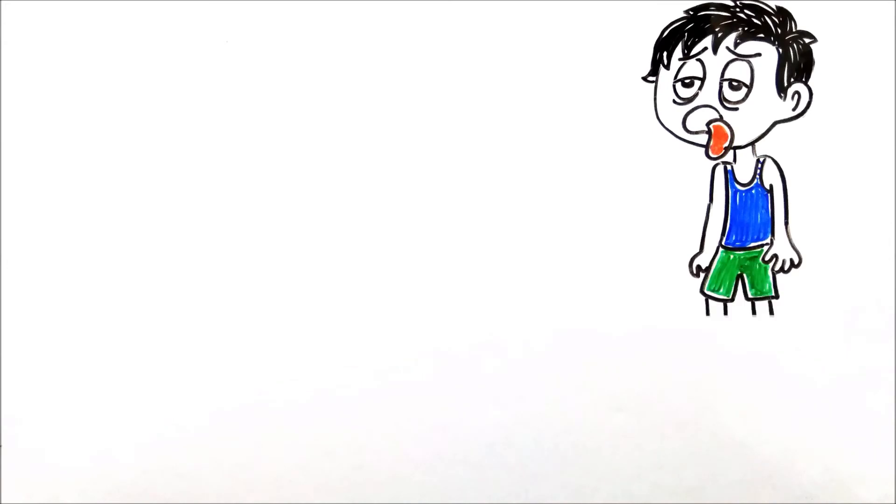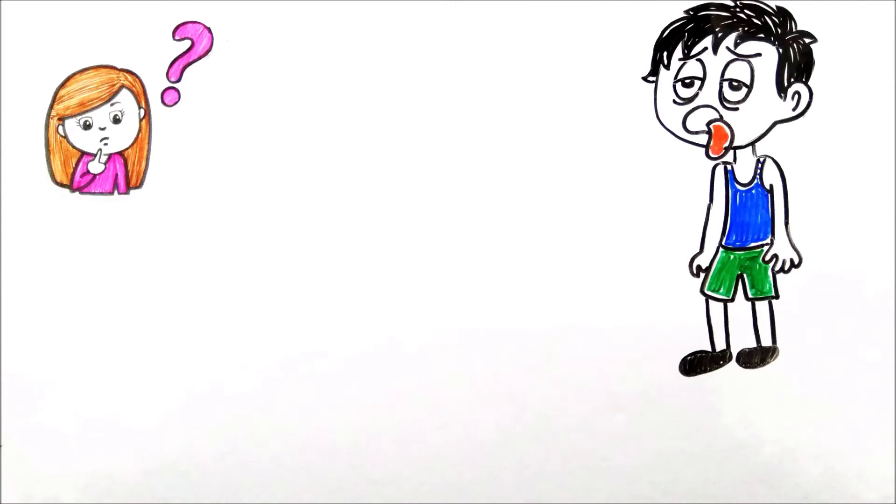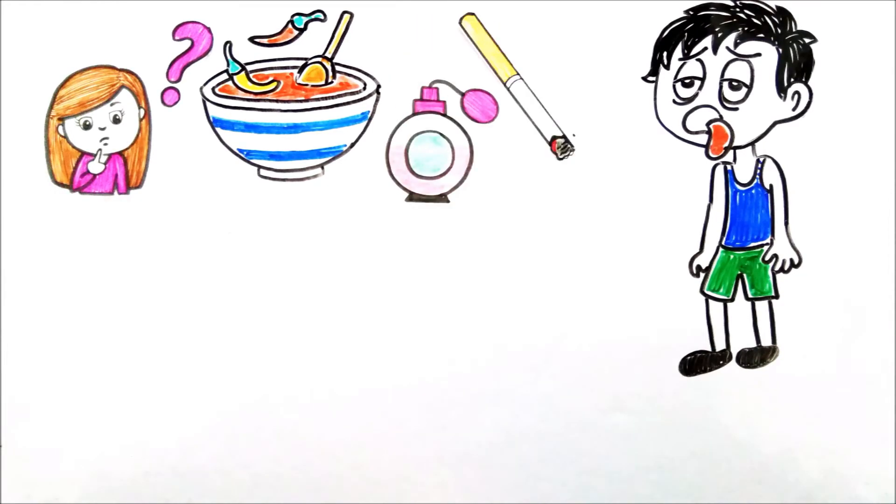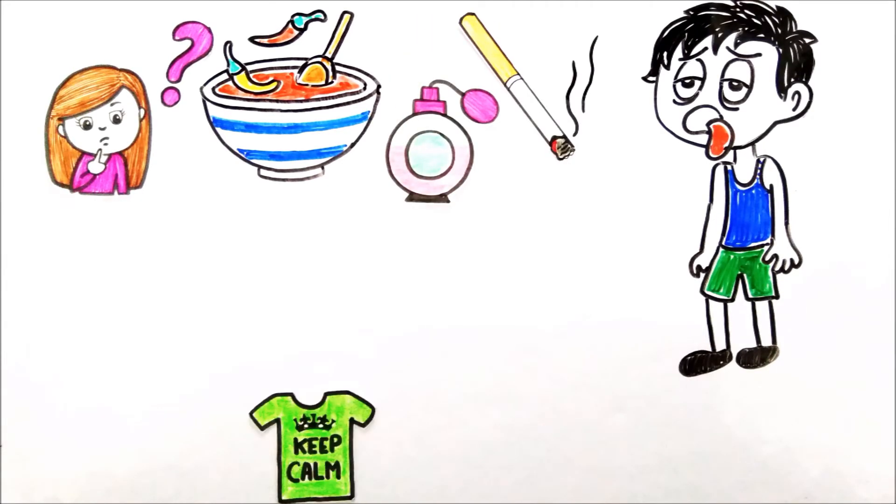Usually motion sickness is not dangerous unless the person gets quickly dehydrated by vomiting. So how can this motion sickness and vomiting be prevented? Avoid heavy and spicy food before travelling. Avoid strong odours and smoking. Maintain slow and deep breathing.